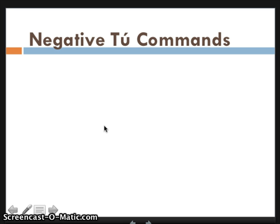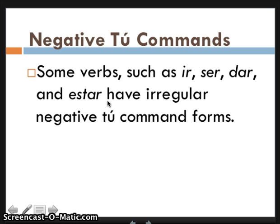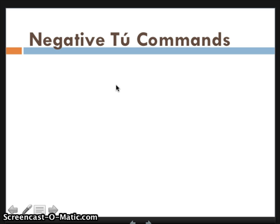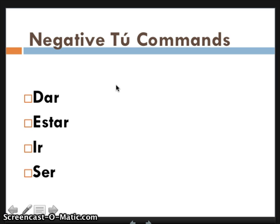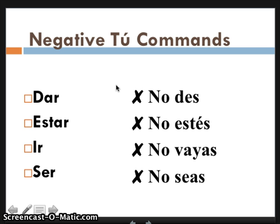Some verbs — IR, SER, DAR, and ESTAR — have irregular negative tú commands. This actually makes sense because 'ir' in the yo form is 'voy,' 'ser' is 'soy,' 'dar' is 'doy,' and 'estar' is 'estoy.' All of those have -oy, so there's no plain -o for me to remove, which makes them irregular — that's how I remember those. Here's what they look like: 'dar' becomes 'no des,' 'estar' becomes 'no estés,' 'ir' becomes 'no vayas,' and 'ser' becomes 'no seas.'